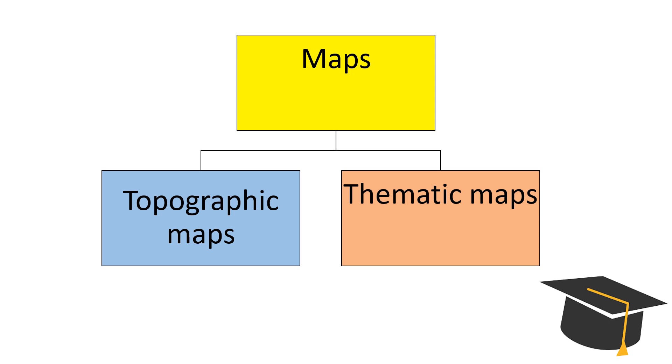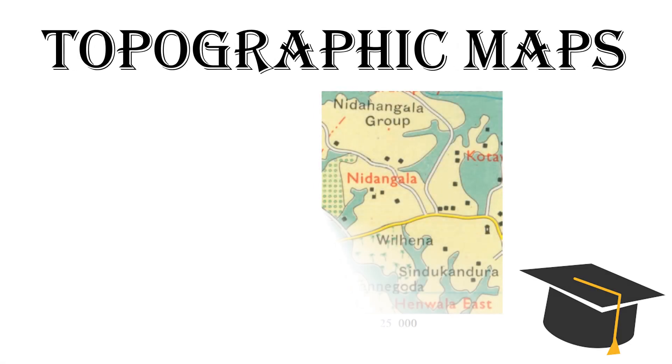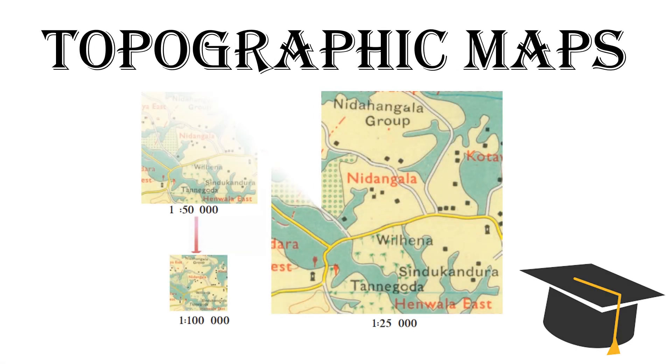Basically for ease of study, maps have been divided into two sections: topographic maps and thematic maps. Among these two types, today we are considering topographic maps.